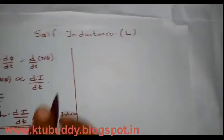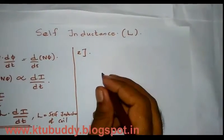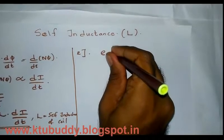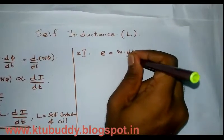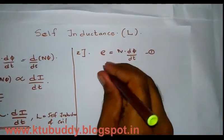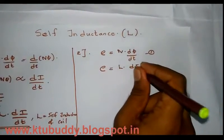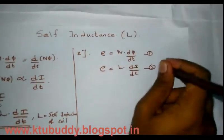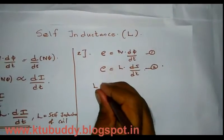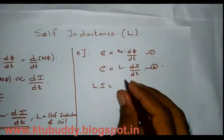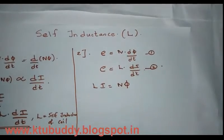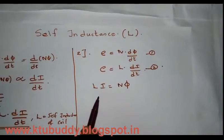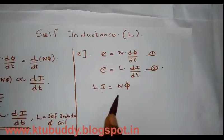Now let us look at the second expression for self-inductance. We know that the first expression gives e = N·(dφ/dt), and the second expression gives e = L·(di/dt). Equating these two expressions, we get L·i = N·φ.